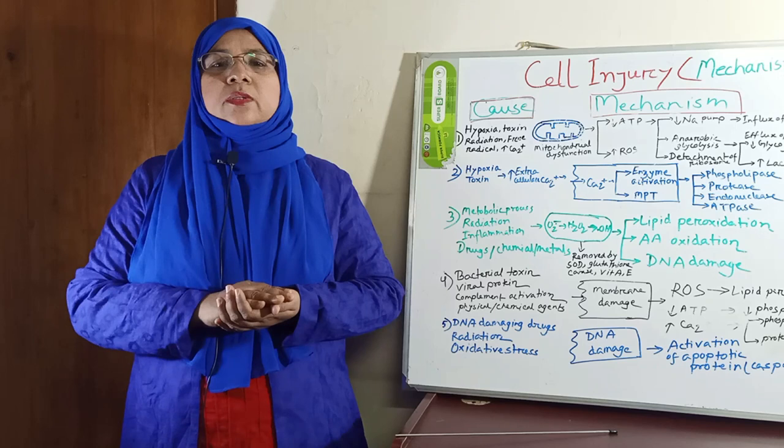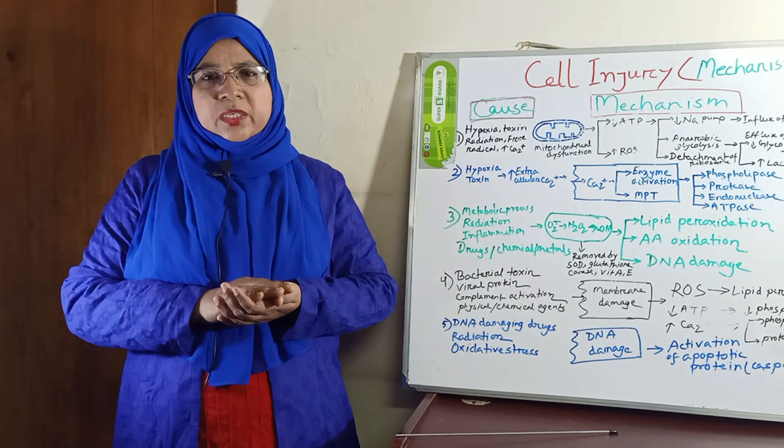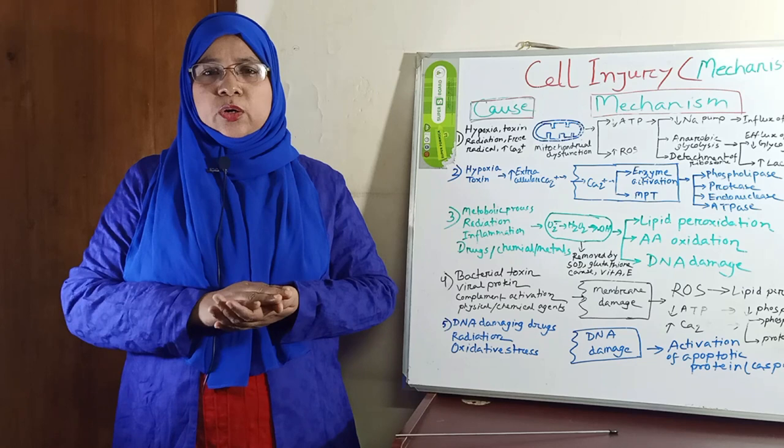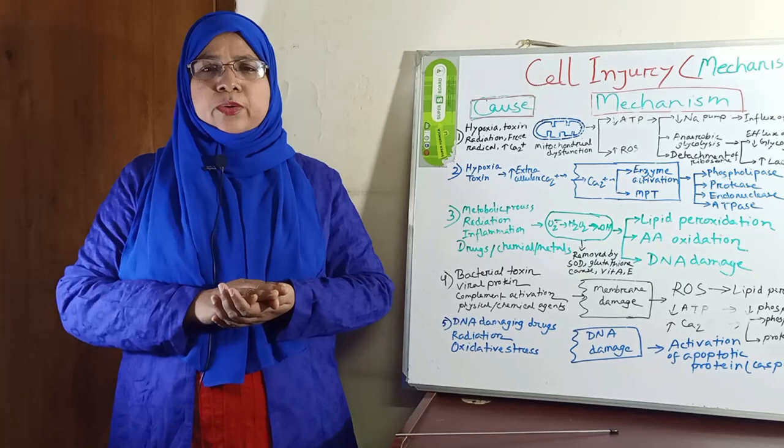Now, what are the causes of cell injury? The most important and fundamental cause of cell injury is hypoxia, that means decreased oxygen level in the cell or tissue. Hypoxia is caused by various factors like ischemia, that is decreased blood flow to any organ, and inadequate oxygenation of blood due to cardiorespiratory failure.